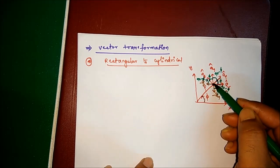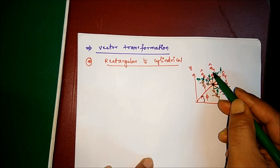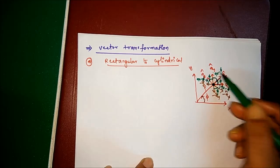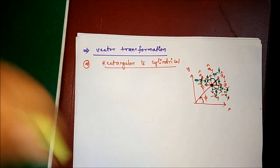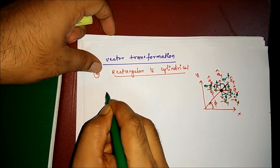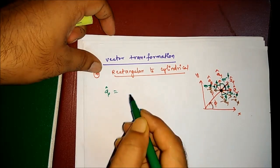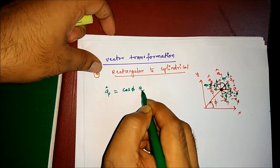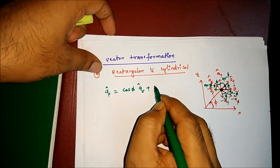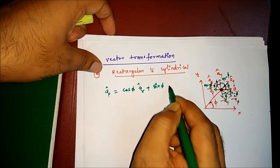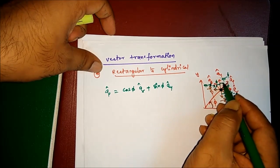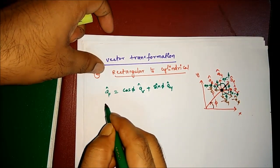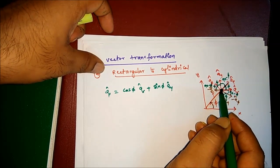Now I can write a_ρ — this vector can be resolved into components along x and along y. Along the x direction the angle of a_ρ is 90 minus φ, so the x component is cos(90−φ) = sin φ, giving a_ρ = sin φ · a_x plus cos φ · a_y... wait, the angle of a_ρ with a_x is φ, so a_ρ = cos φ · a_x + sin φ · a_y.